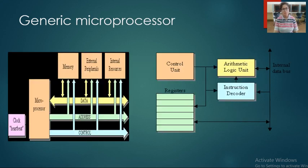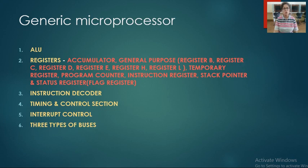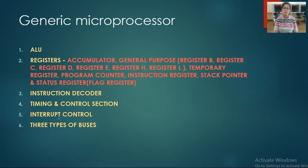In the generic microprocessor we have to study all these things. The first general thing of a microprocessor is ALU — arithmetic logic unit — which is used to perform all the calculations: addition, subtraction, comparisons like 'A is less than B', and boolean functions like whether a condition is true or false.